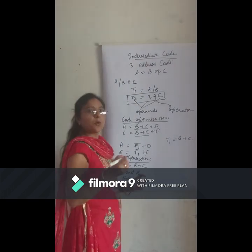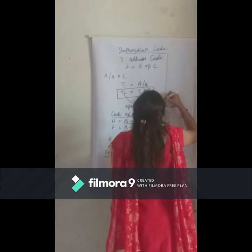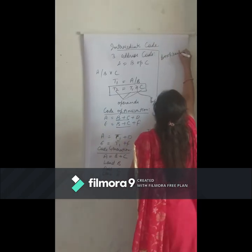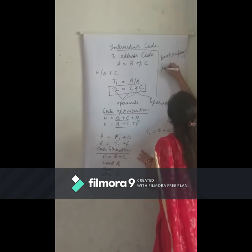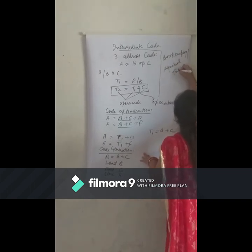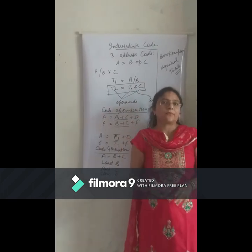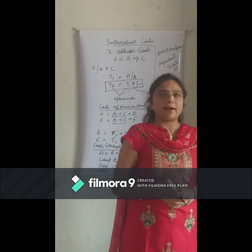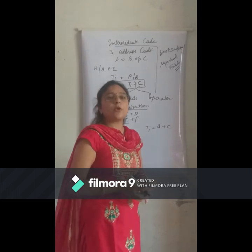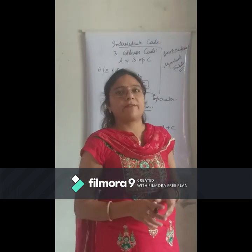Now, bookkeeping means symbol table — it is a data structure used to store information about all identifiers in the code. The last component is error handling, which is used to handle errors in each phase of the compiler. Thank you everyone.